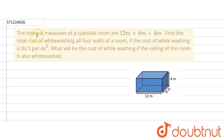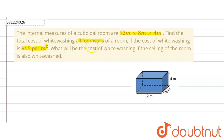The given question says that the internal measures of a cuboidal room are 12 × 8 × 4 meters. Find the total cost of whitewashing all four walls of the room, if the cost of whitewashing is rupees 5 per meter square. What will be the cost of whitewashing if the ceiling of the room is also whitewashed?